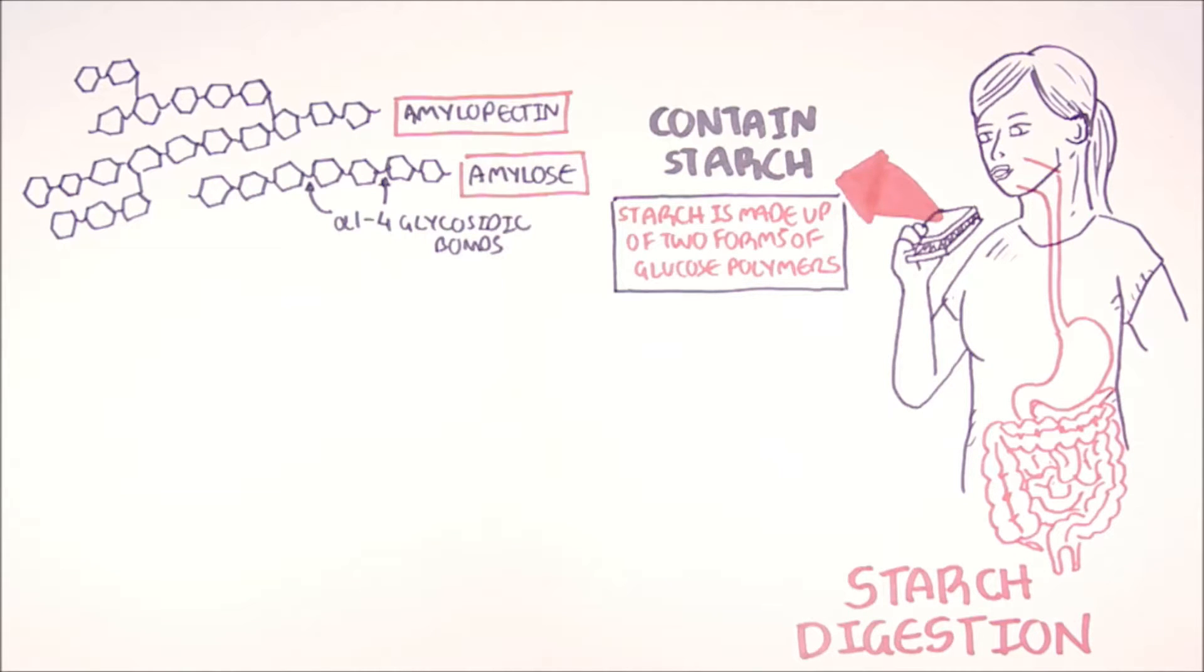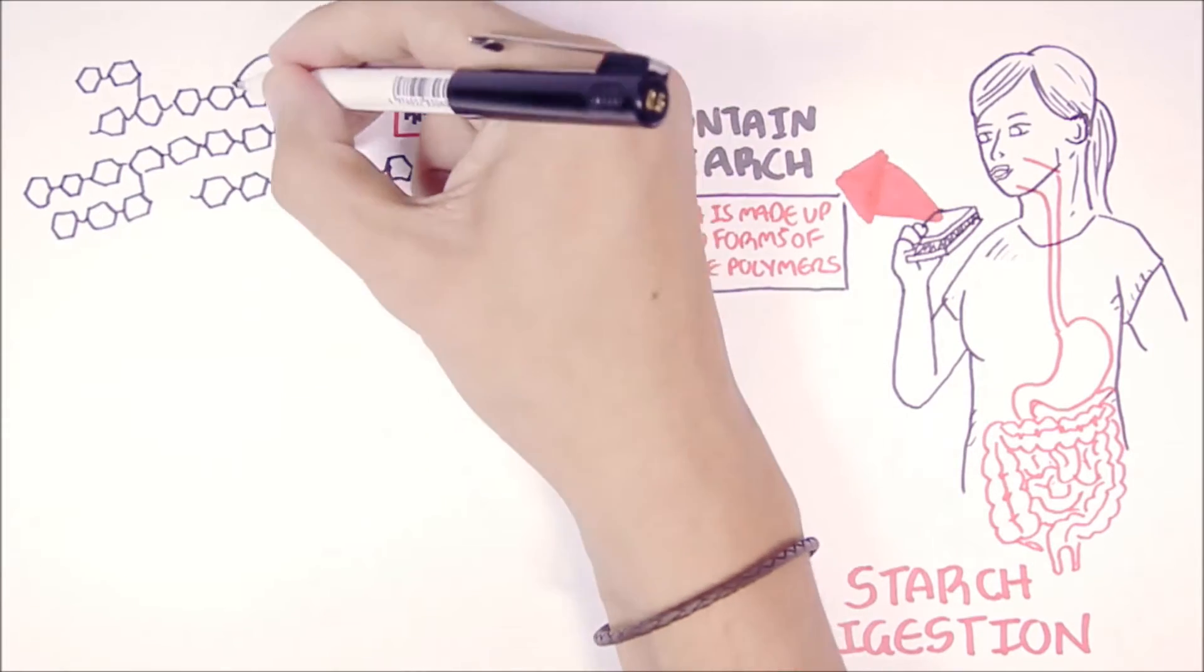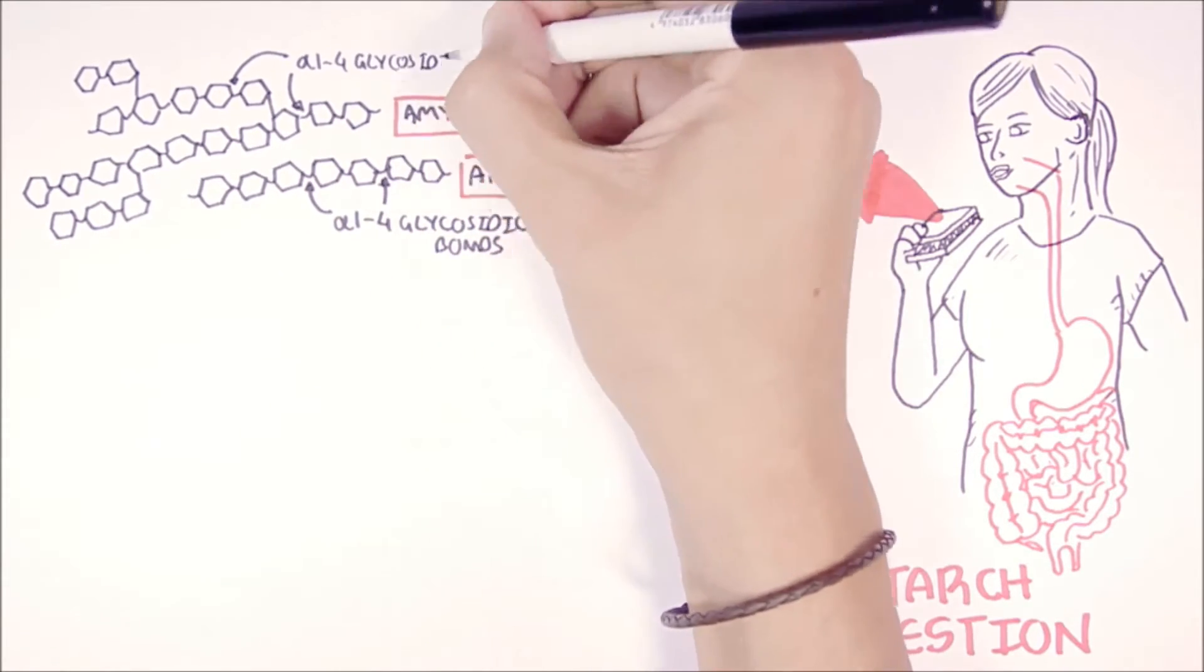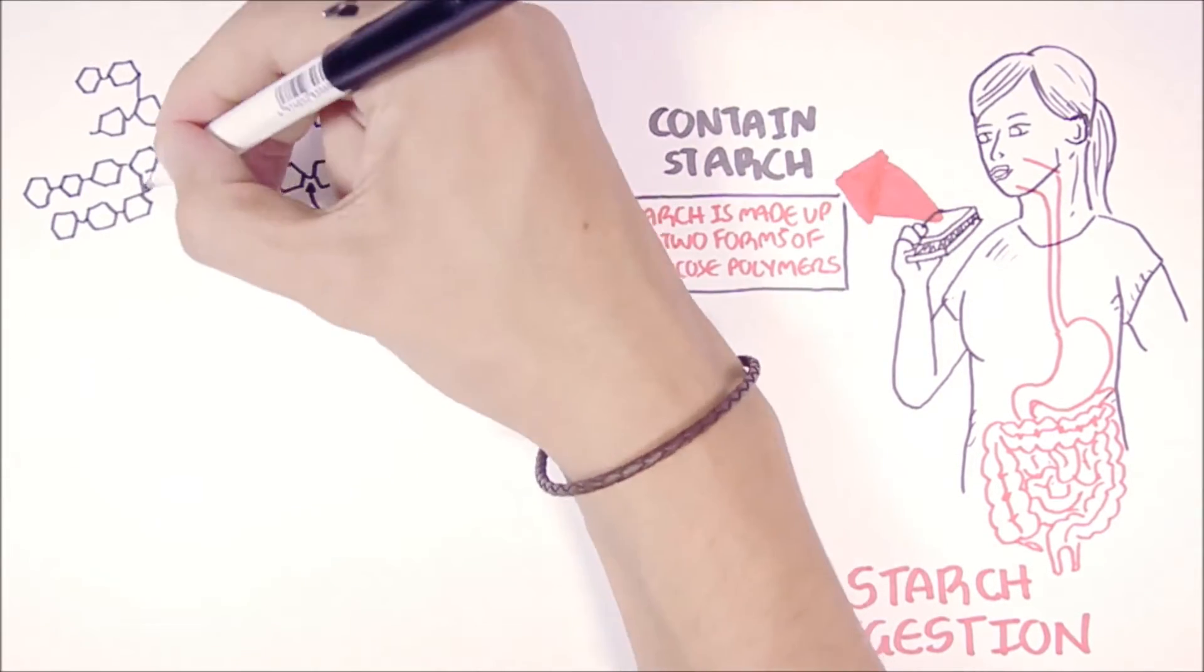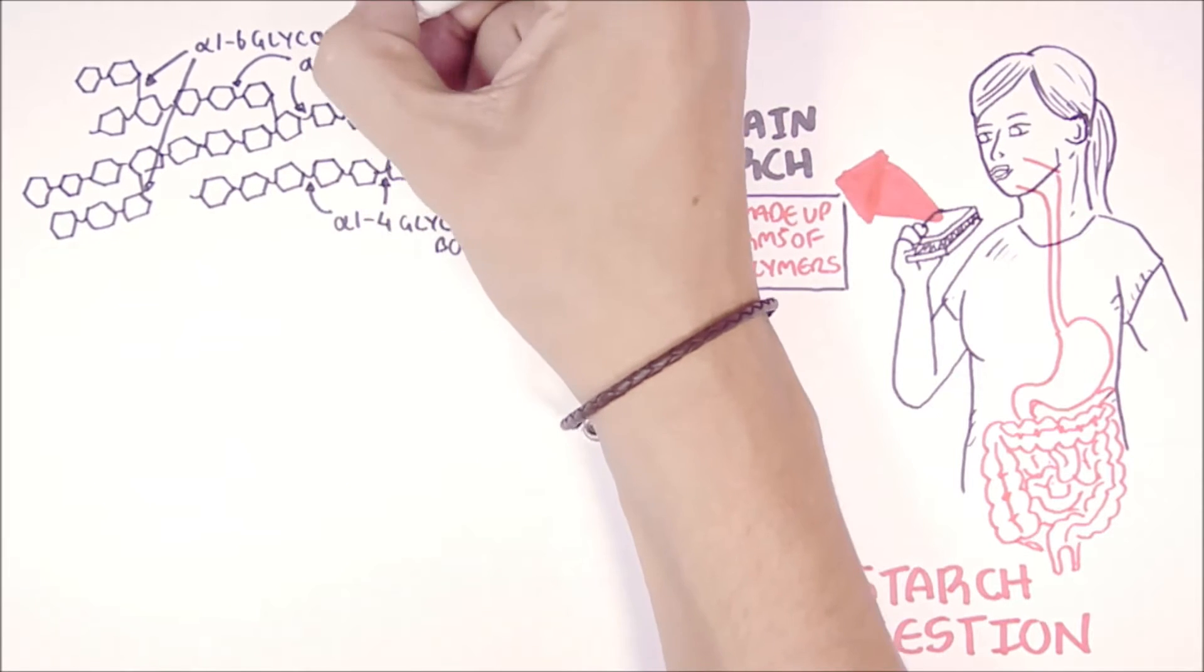In amylopectin, the glucose molecules are also linked by alpha-1,4 glycosidic bonds. But the branch points are linked by alpha-1,6 glycosidic bonds.